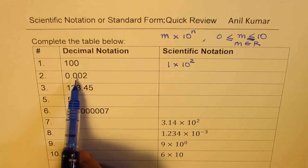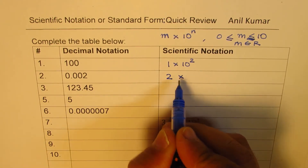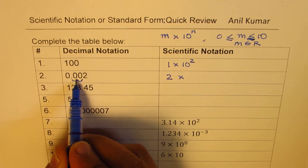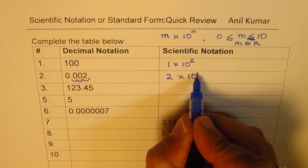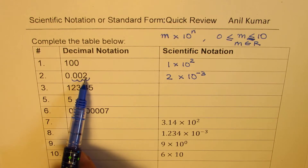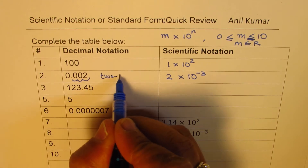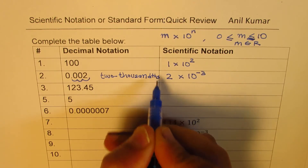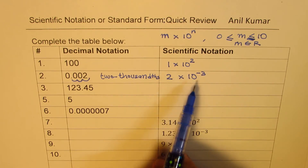Now we have 0.002. We need to write this as 2 times something. To bring it to 2, we actually multiply it by 10, 100, 1,000. So we write here 10 to the power of minus 3. It was 3 places — 2 thousandths. So it is written as 2 times 10 to the power of minus 3.